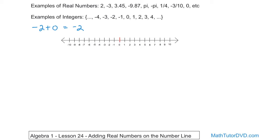Here in the middle of the number line is the number 0 — the center. Numbers going to the right are positive, going off to positive infinity. Numbers going to the left are negative, increasingly negative, going off to negative infinity. When you add positive numbers, you move to the right along the number line from your starting location. If you're adding negative numbers, you move to the left — because adding a negative number is just like subtraction.